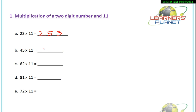Similarly, we take the next example: 45 into 11. We split the number 45. Write 4 here and 5 here. What is 4 plus 5? It's 9. You can do these calculations even mentally — you just have to observe the number, add the digits, and put the right number in between. 62 into 11: write 6 here, 2 here, 6 plus 2 is 8. Try to do these calculations mentally.